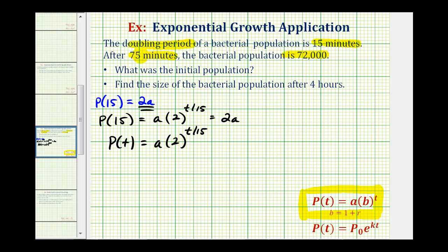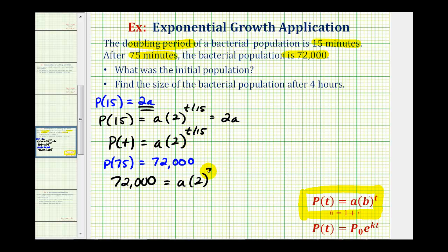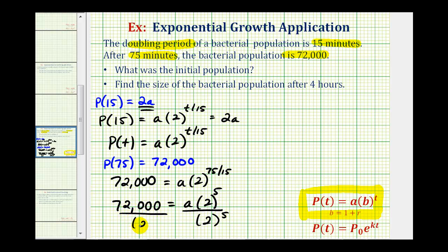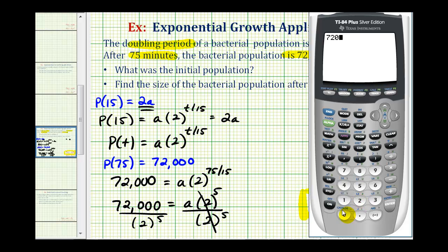Since we know that after 75 minutes the population is 72,000, we know that P(75) must equal 72,000, and we can use this to determine the value of a, the initial population. So 72,000 must equal a times two raised to the power of 75 divided by 15. That gives us 72,000 equals a times two to the fifth. Solving for a by dividing both sides by 32, we get 72,000 divided by 32, so the initial population of the bacteria is 2,250.